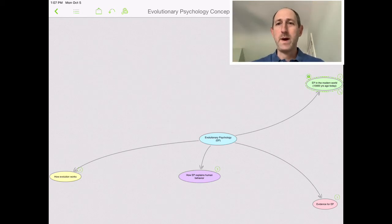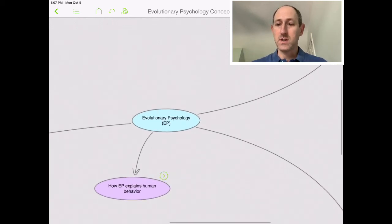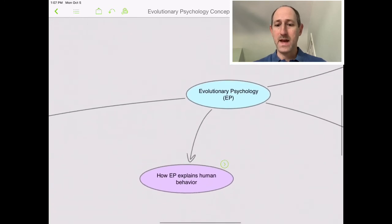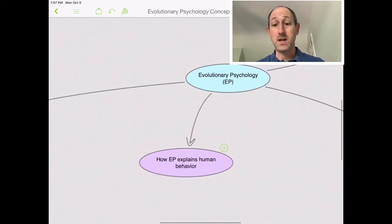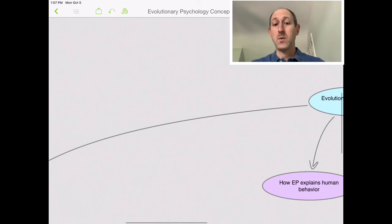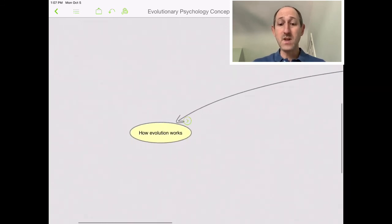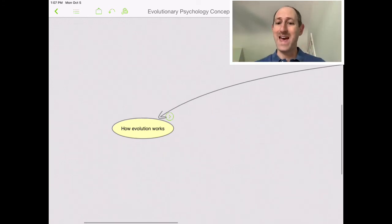All right, welcome back everybody. This is David Panoush of the Edmund Burke School. I'm going to do a video lecture still talking about evolutionary psychology. In previous lectures, we talked about how evolutionary psychology helps explain human behavior in general. We talked about how evolution works and how that has led to the psychology that humans have,